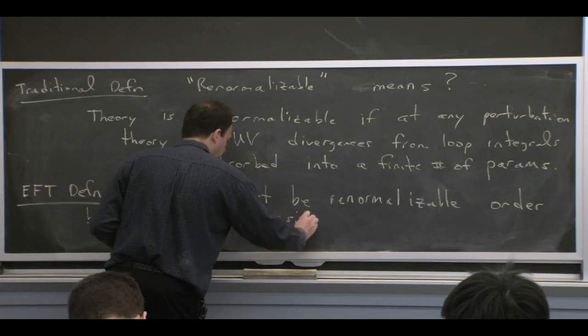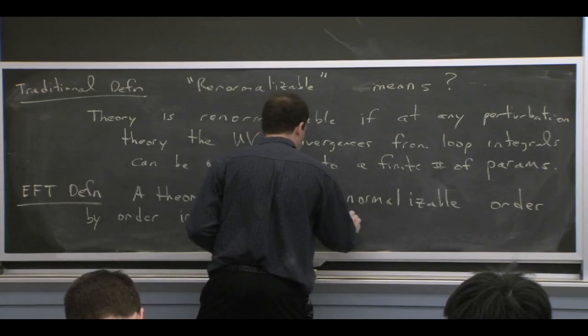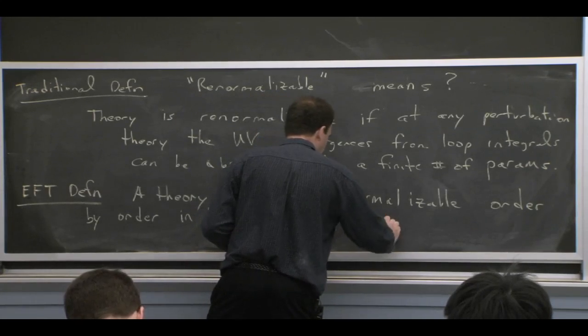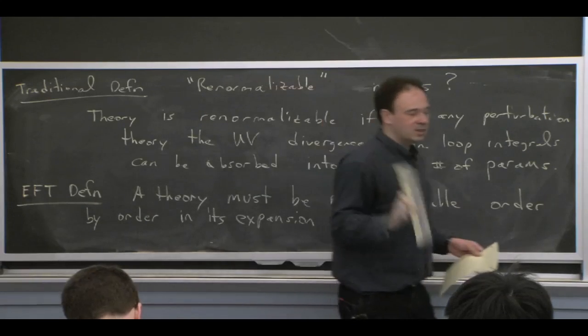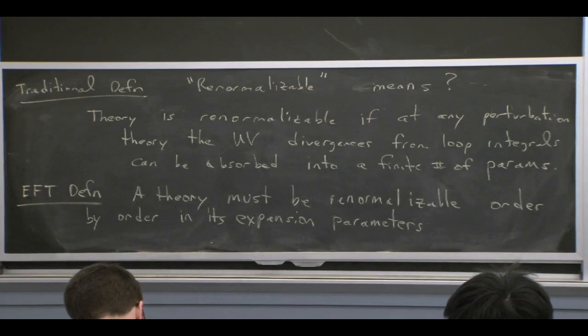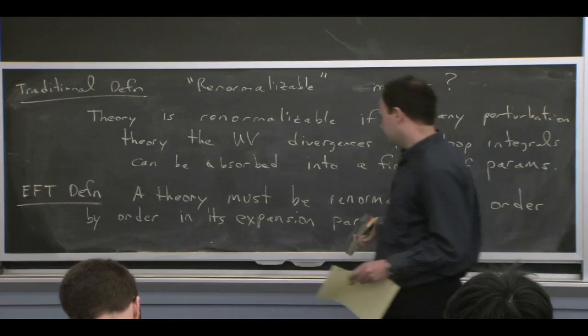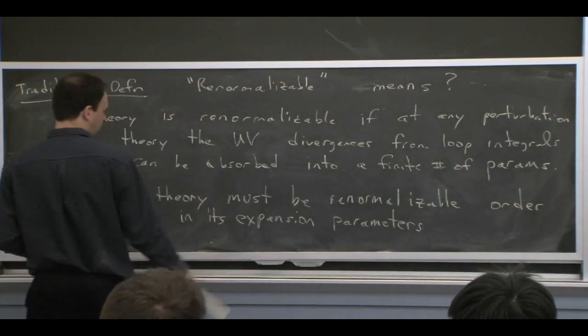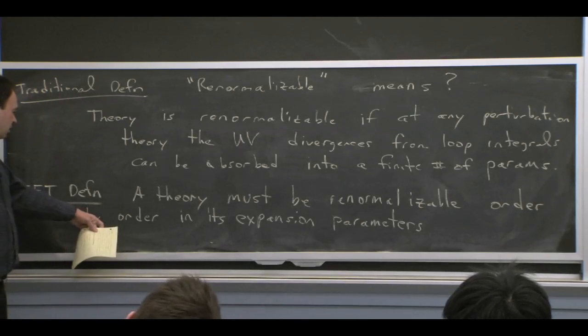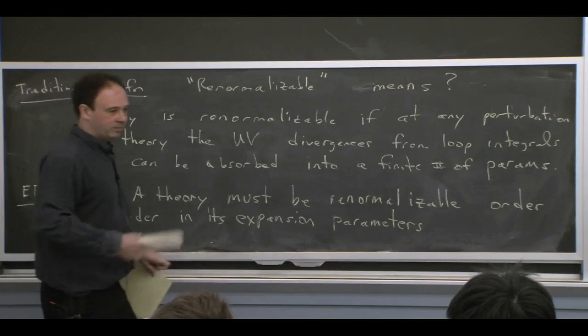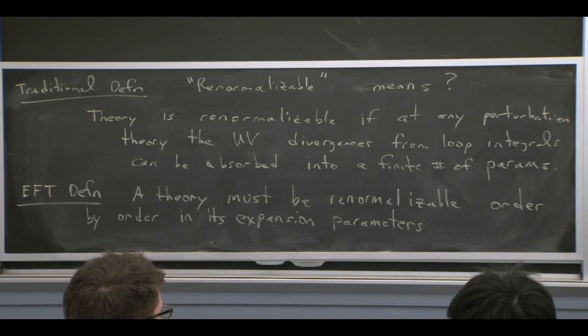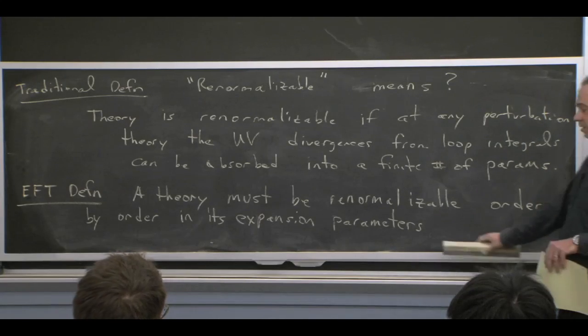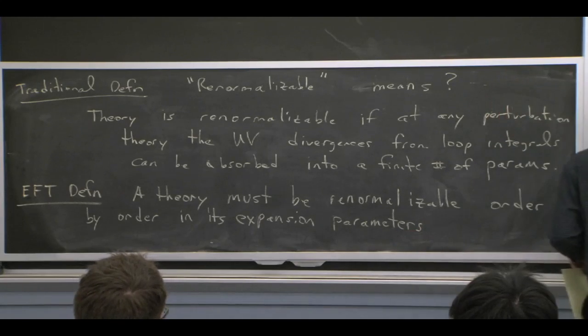So it says that a theory must be renormalizable order by order in its expansion parameter. Or if there's more than one, its expansion parameters. So even just this sentence alone tells you why power counting is such an important part of the effective theory. Because the effective theory to make sense is renormalizable quantum field theory needs to know about its expansion parameter. We're saying that we're normalizable that we can make sense of the theory, absorb all the infinities, only order by order in expansion parameters, in general.